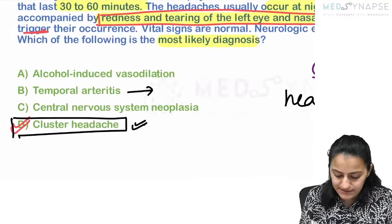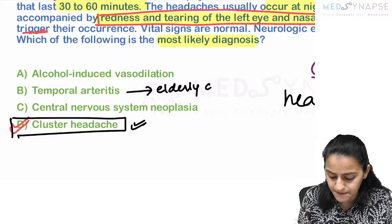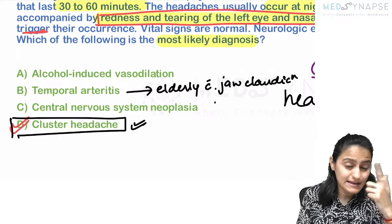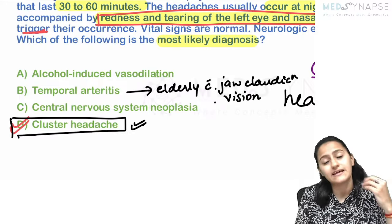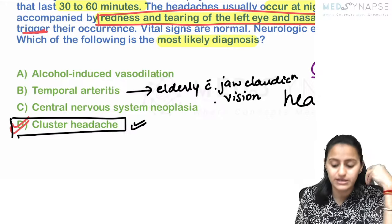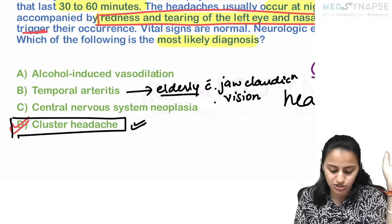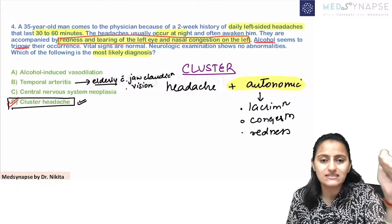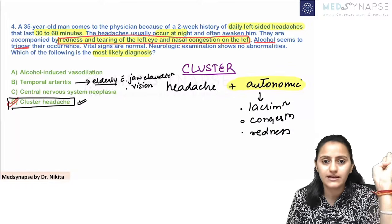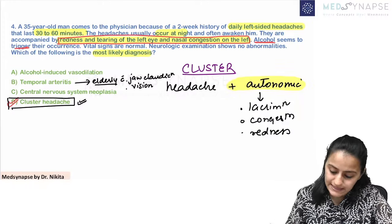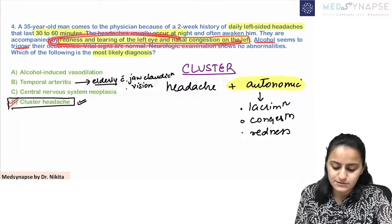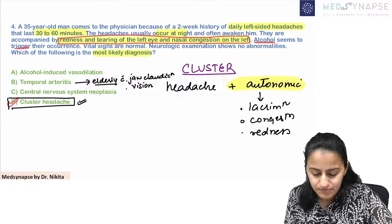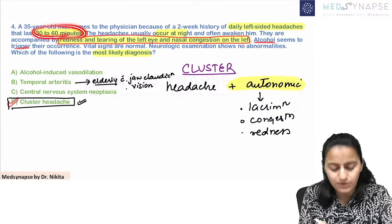Cluster headache = combination of headache and autonomic symptoms — lacrimation, rhinorrhea, nasal congestion, redness of the eye — classically in a young male awakening from sleep, unilateral, lasting 30 to 60 minutes. The association of autonomic symptoms tells you this is cluster headache. Temporal arteritis would be an elderly patient with jaw claudication, vision problems (monocular blindness), and elevated inflammatory markers.